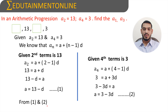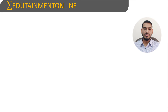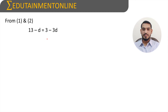From equation 1 and 2, we have a is equals to 13 minus d and a is equals to 3 minus 3d. Since the left hand sides of both equations are equal to a, we can equate the right hand sides: 13 minus d is equals to 3 minus 3d.